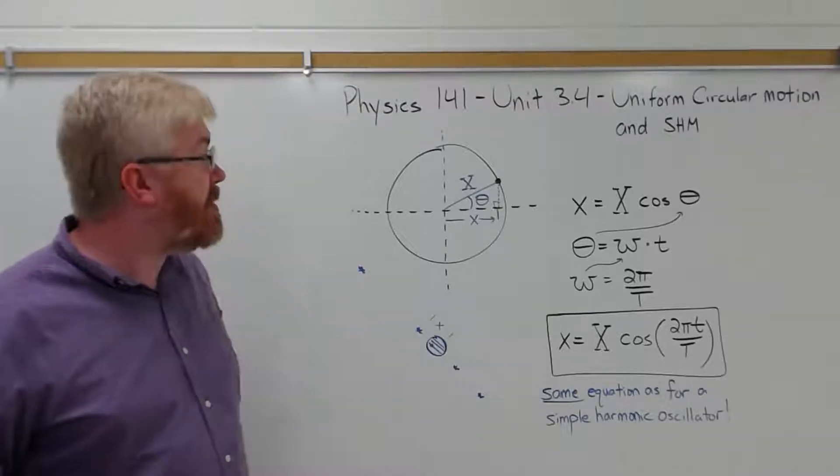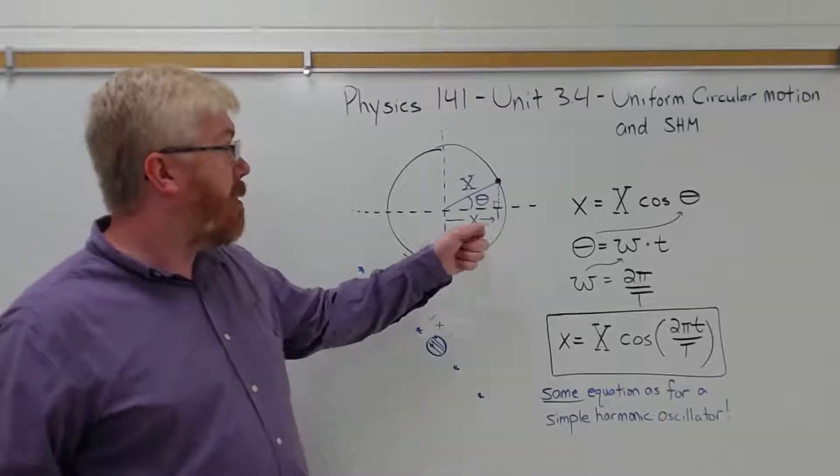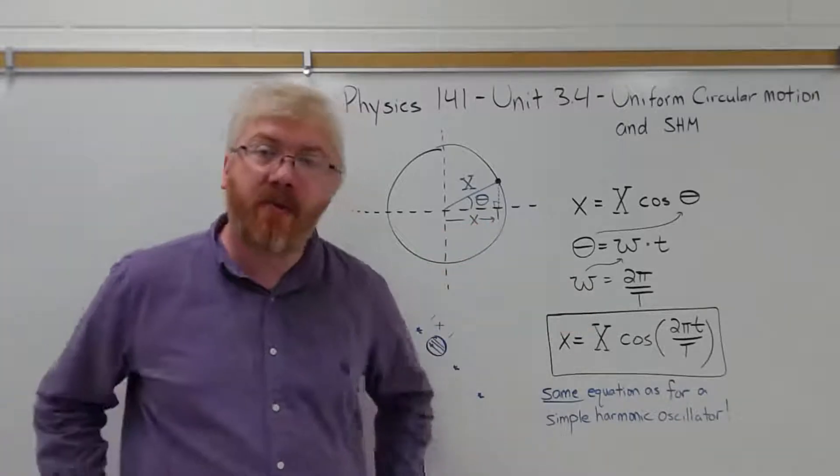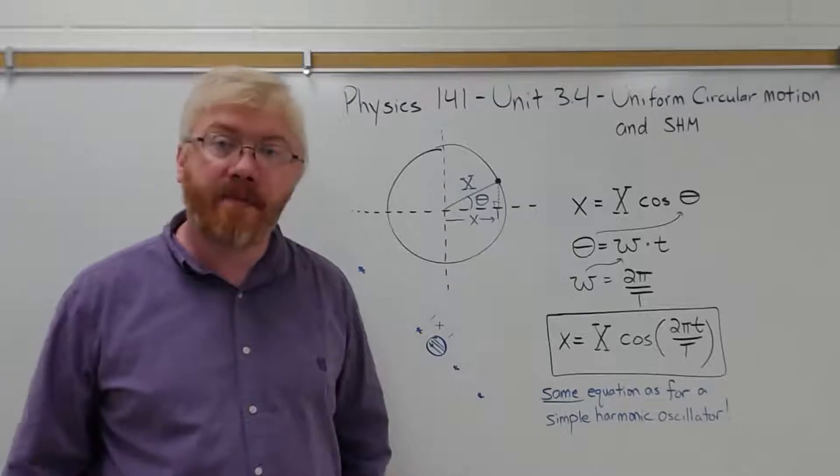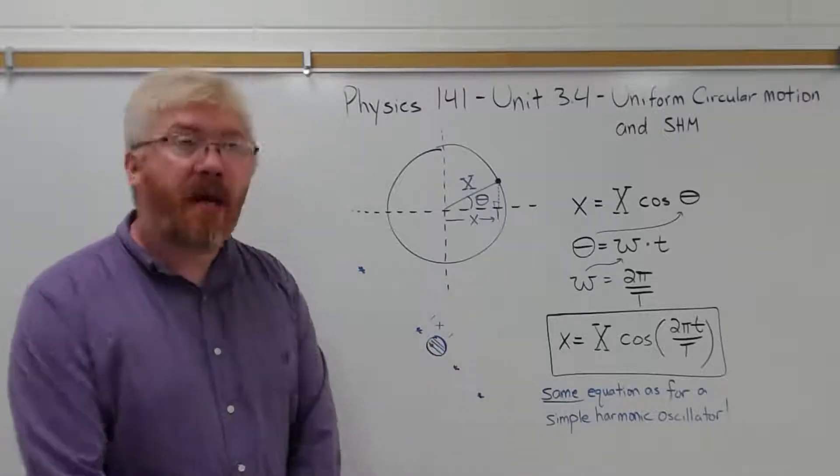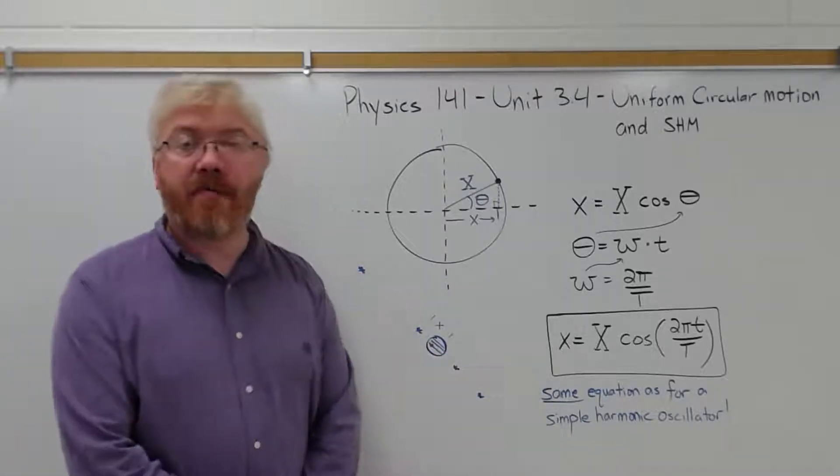And those four sine waves then will tell you, or periodic waves, will tell you what the period is for each of the four planets, or four moons. And we call them the Galilean moons after Galileo's discovery.